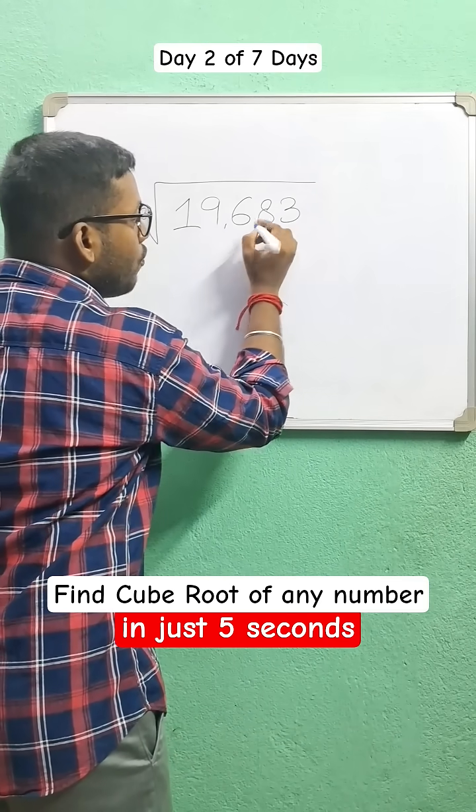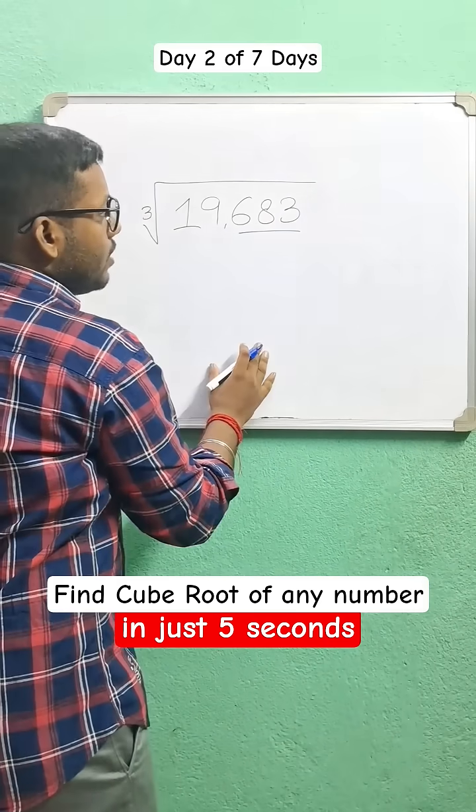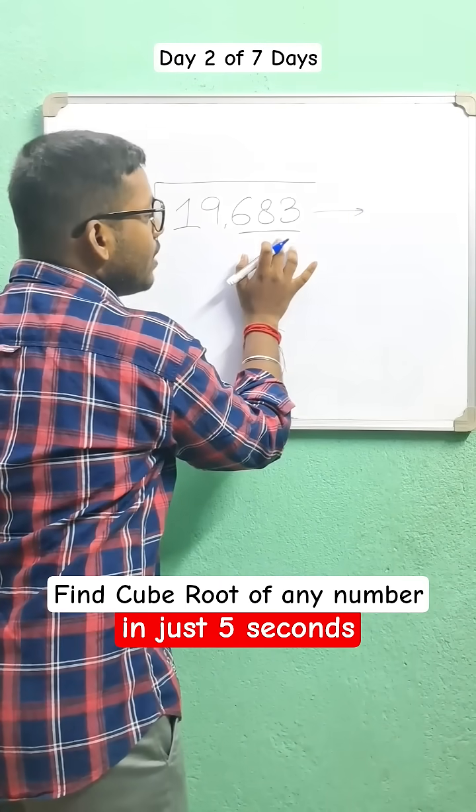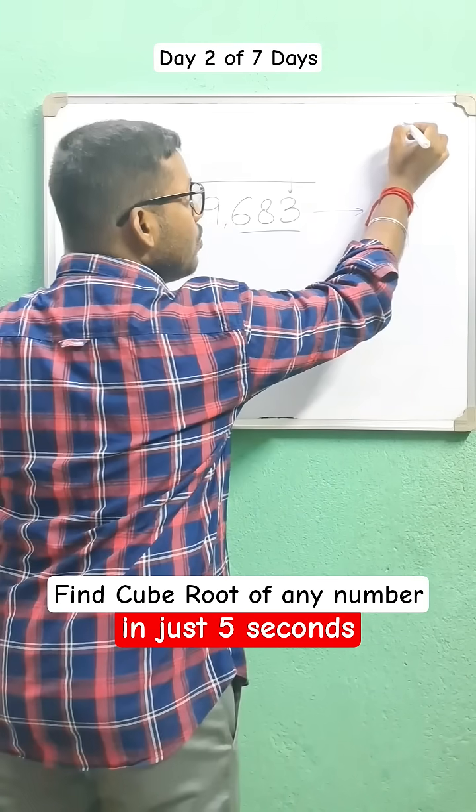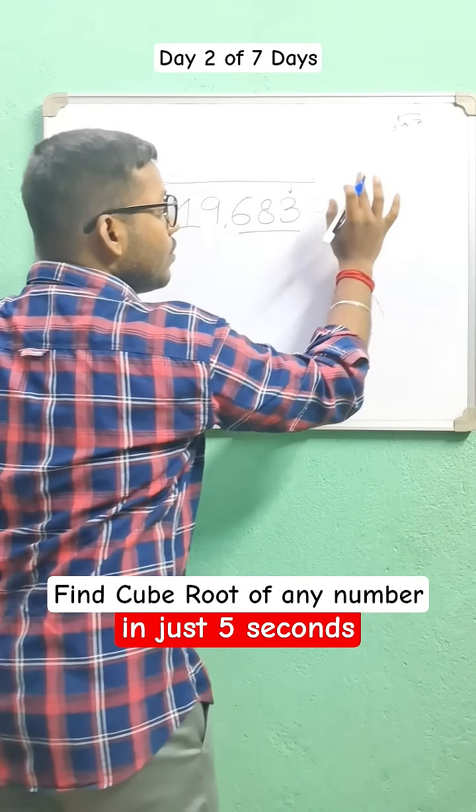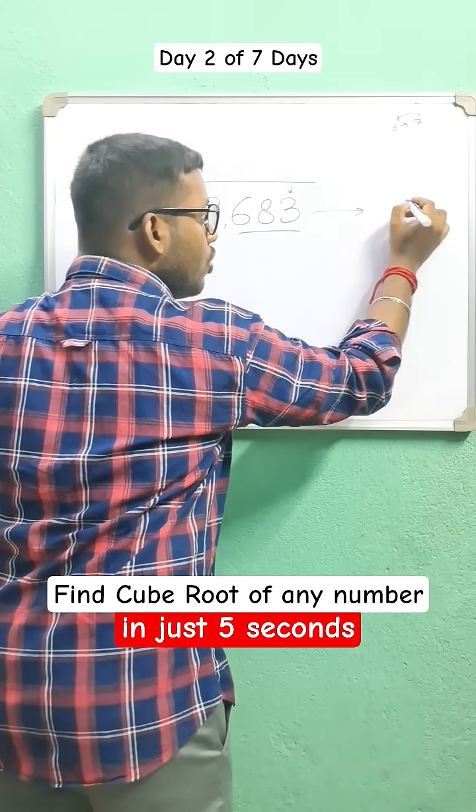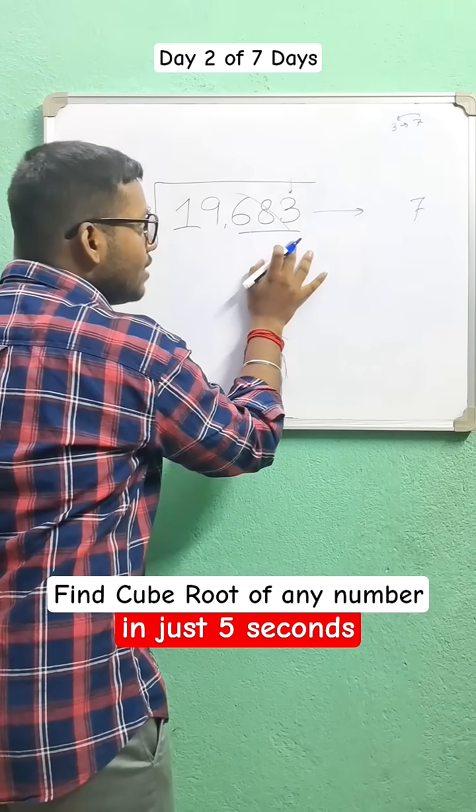Now, since we are finding the cube root, we have to pair the last three digits and try to find out whose cube might be this. Since the last digit is 3, we know the cube of 3 ends with 7 and the cube of 7 ends with 3. So this number should end with 7. Okay, we are done with these three digits.